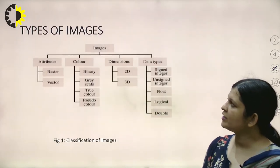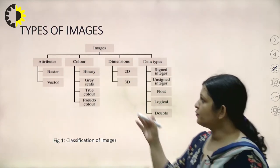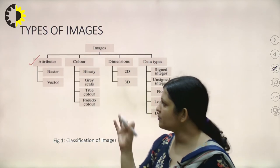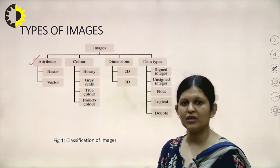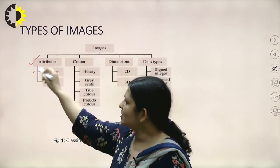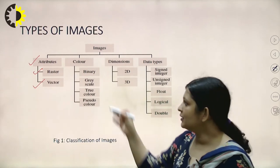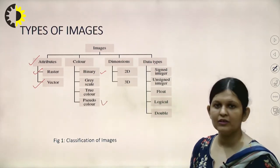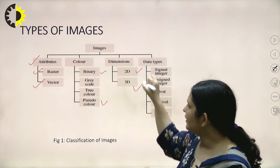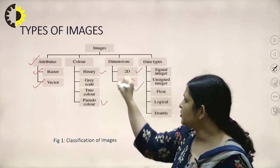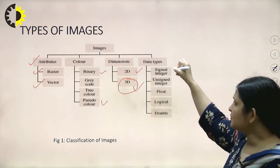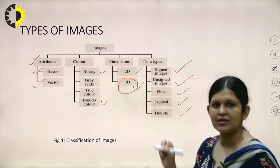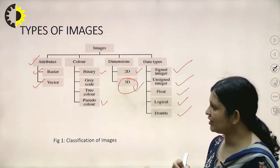Before going into details, we need to know the types of images. Based on attributes, we have raster and vector. Based on colors, we have binary, grayscale, true color, and pseudo color. Based on dimension, we have 2D and 3D images — 3D images are very popular nowadays. Based on data types, we have signed, unsigned integer, float, logical, and double integer.